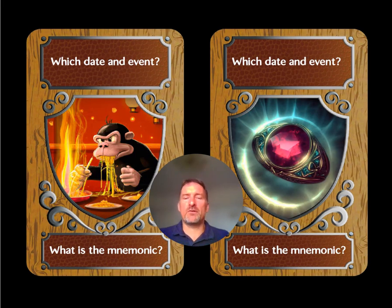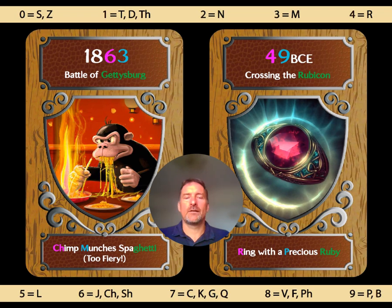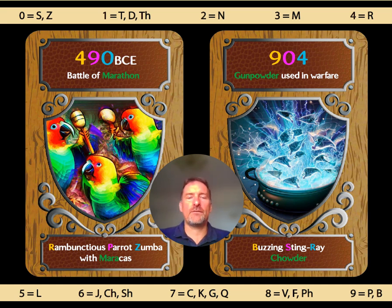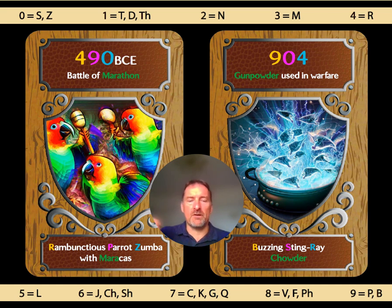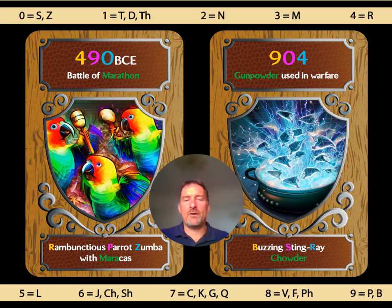Here's some revision — can you remember the mnemonic phrases for the chimp and the ring images? 'Chimp munches spaghetti' and 'ring with a precious ruby.' Well done if you're starting to remember those. Now we've got the Battle of Marathon and gunpowder used for the first time in warfare. We've got 'rambunctious parrot zumba' with maracas, and 'buzzing stingray chowder.' Make those links between chowder and gunpowder, maracas and marathon, then move on when you're ready.